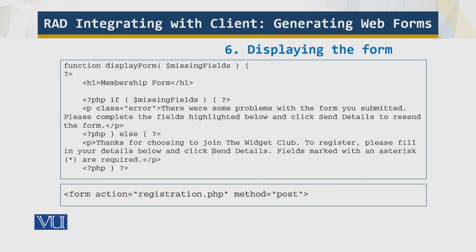The display_form function itself displays the HTML form. If the missing fields array is empty, the form is presumably being displayed for the first time, so display_form shows a welcome message. However, if there are elements in the array, the form is being re-displayed due to errors, so the function shows an appropriate error message. The form uses the POST method and its action attribute points back to the script URL. Each form control is created using HTML markup, with validate_field, set_value, set_check, and set_selected called throughout to insert appropriate attributes.